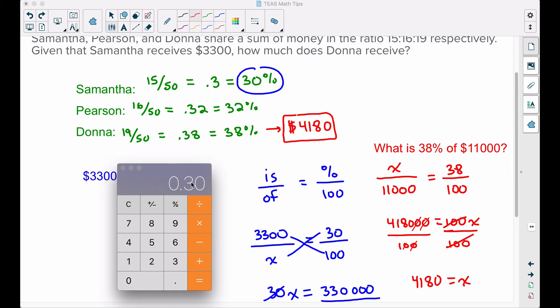If I take 30 percent, that's 0.30, of the total amount of money, $11,000—11 and then three zeros—notice I get 3300. We knew that's how much Samantha received. Even though Pearson's piece here, like finding out how much Pearson received, that is unnecessary for this problem, let's go through and repeat this again.